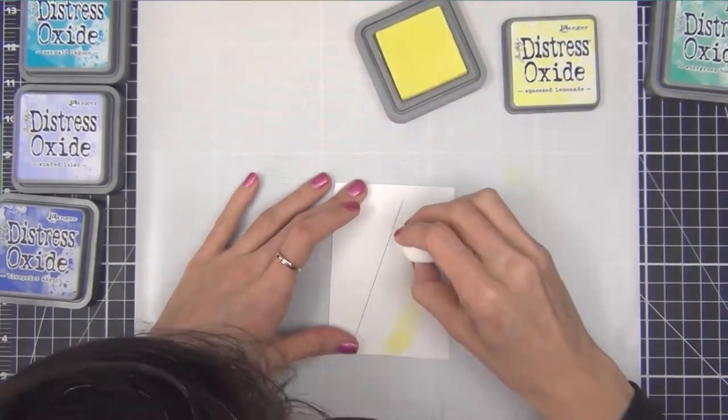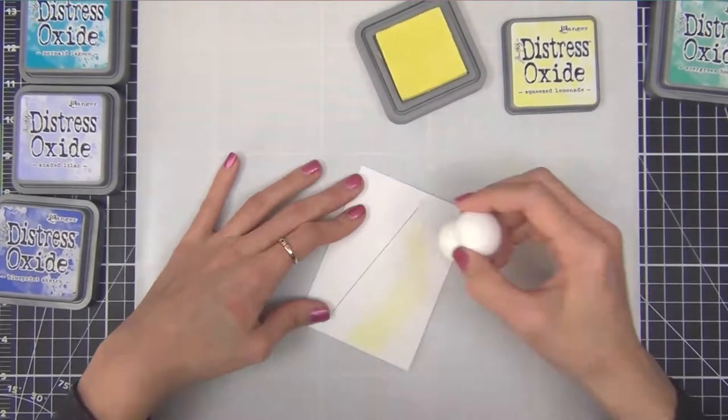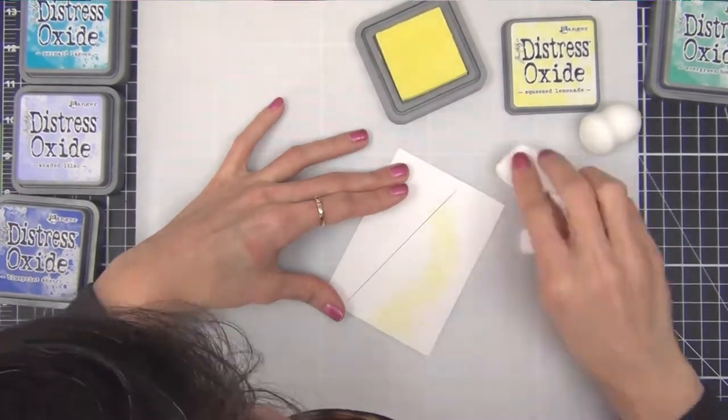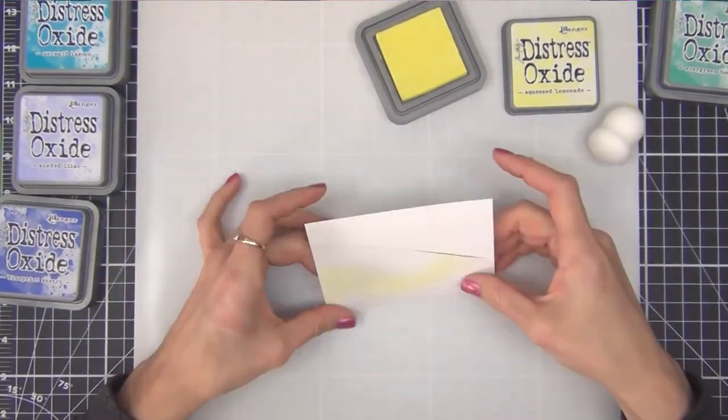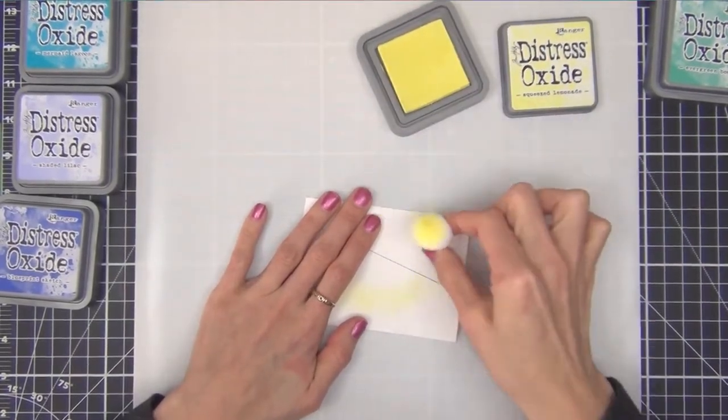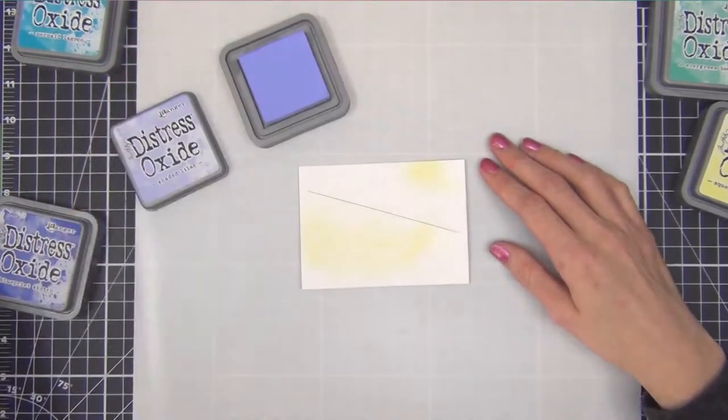Now onto the ink blending portion of the card. I should mention that I'm just playing around here. I wasn't totally sure what I was doing so I end up changing some things as I go. I'm taking some of the new squeeze lemonade and blending it over the star trail using a Nuvo blending sponge. And I have to say I love these, they're my new favorite blending tool for sure.